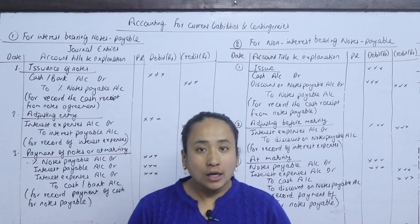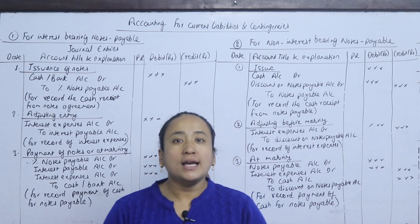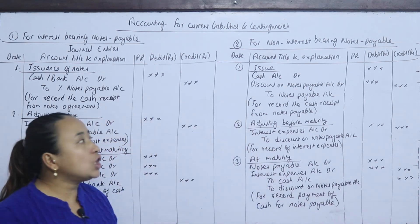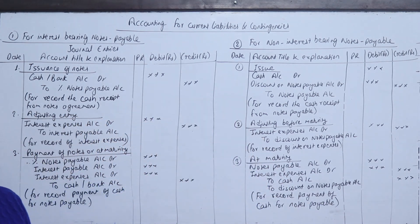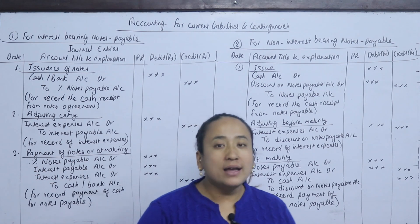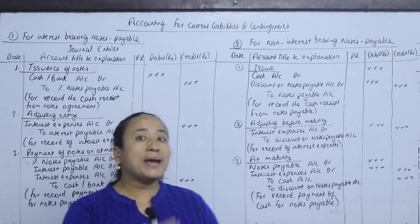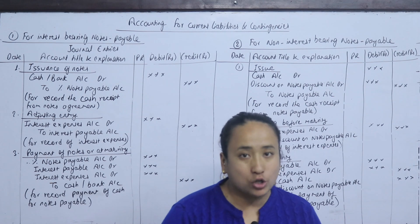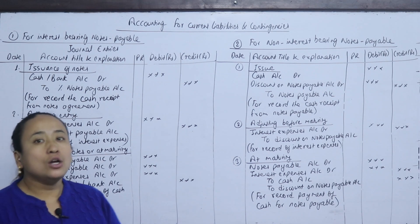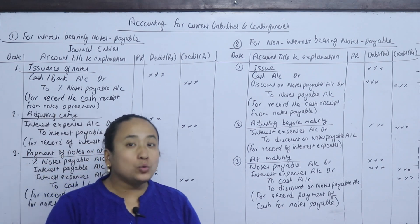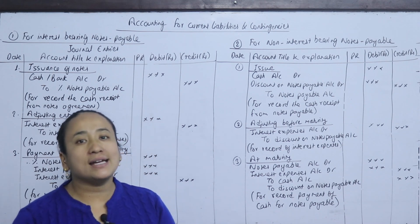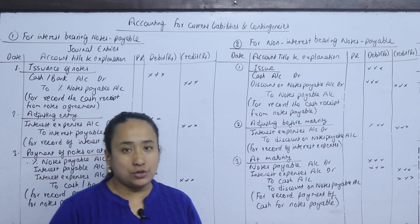There are two types of notes payable: interest-bearing notes payable, which carry an explicit interest rate, and non-interest bearing notes payable, which are issued at a discount. For example, if the company receives Rs. 2,000,000 but the face value payable is Rs. 2,500,000, the difference of Rs. 500,000 is the discount, representing indirect interest — this is non-interest bearing.